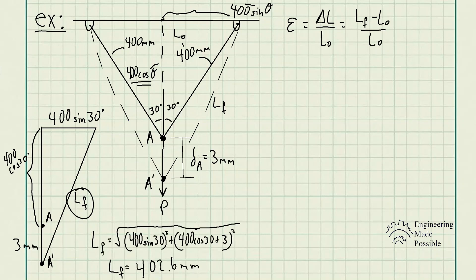We get the final length of 402.6 millimeters, and we know the original length was 400 millimeters. So that change in length is 402.6 minus 400 millimeters, divided by the original length which is 400.